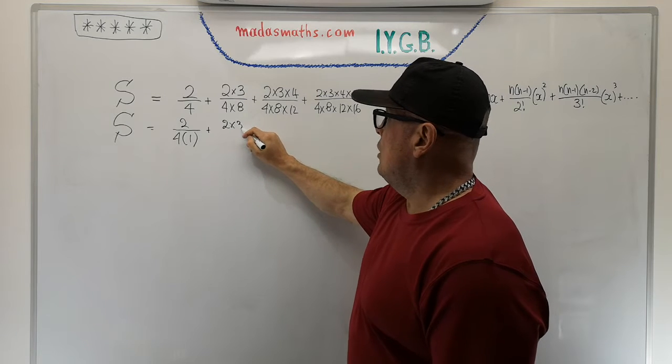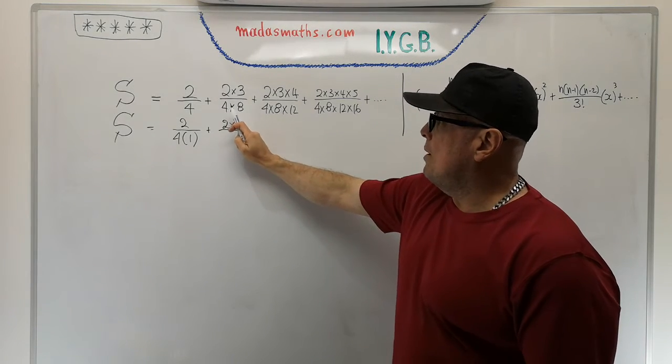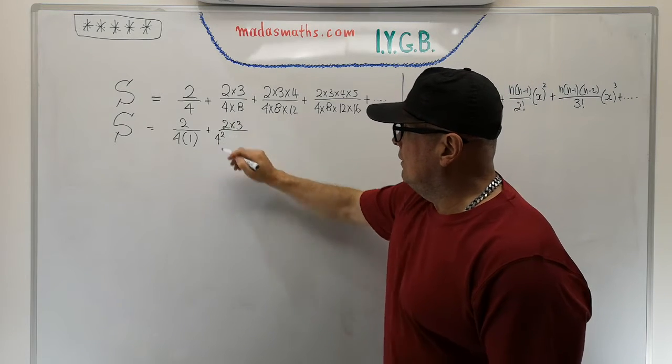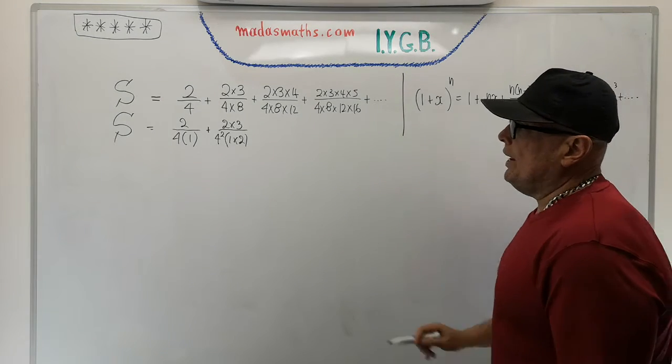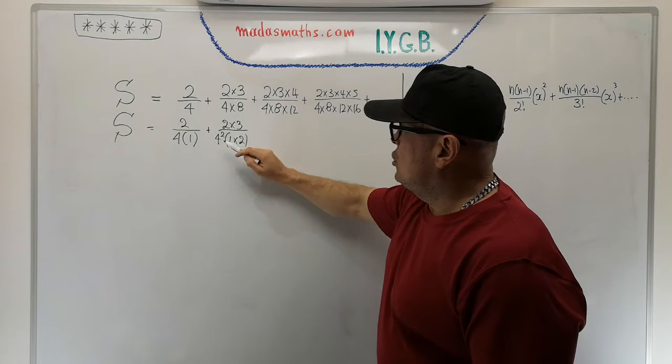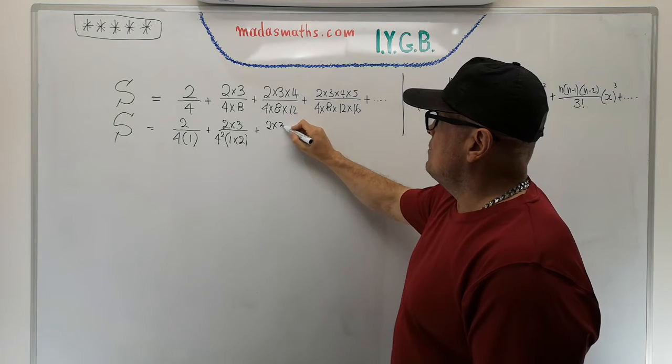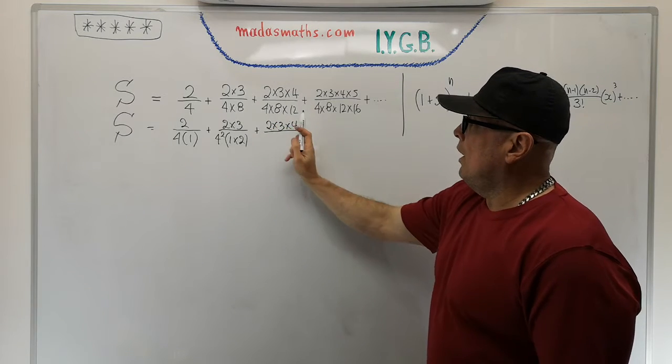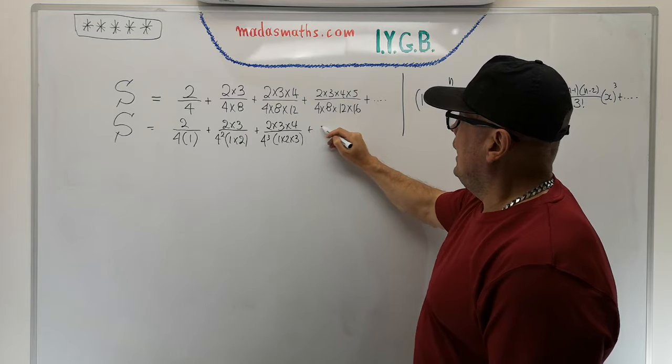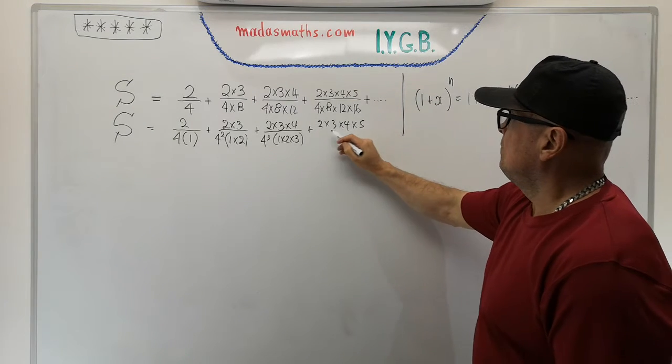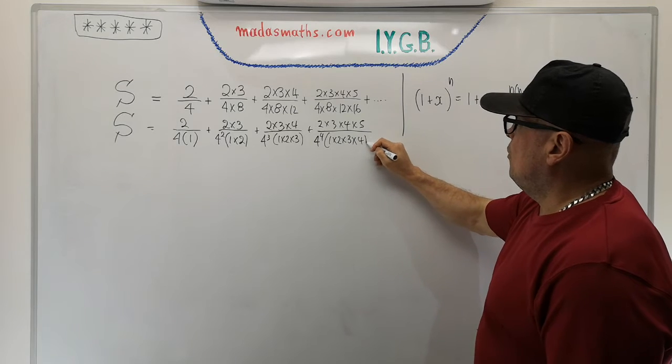I'm not touching the tops at the moment: 2 times 3. And I'm going to factorize a 4 from each of those two terms at the bottom, out of the 4 and out of the 8. So it's going to become 4 squared, 4 from there and 4 from there, and inside the bracket it will leave me 1 times 2. You can check: 4 times 8 is 32, and 4 squared is 16, 16 times 2 is 32. 2 times 3 times 4 and again 4, 4, 4 pulled out, so I write as 4 cubed and 1 times 2 times 3. Similarly 2, 3, 4, 5 on the numerator. Pull out the 4 from each, giving 4 to the power of 4 and 1, 2, times 3 times 4 plus dot dot dot.